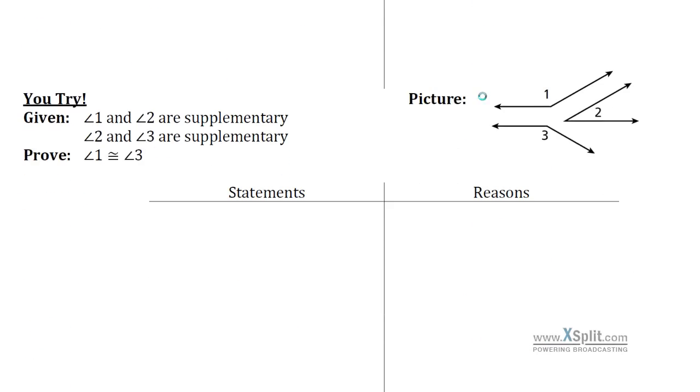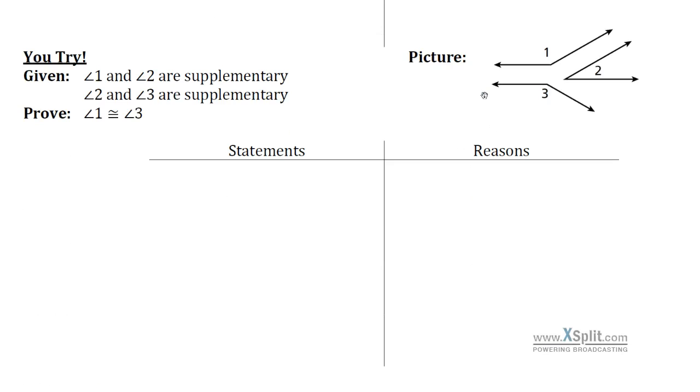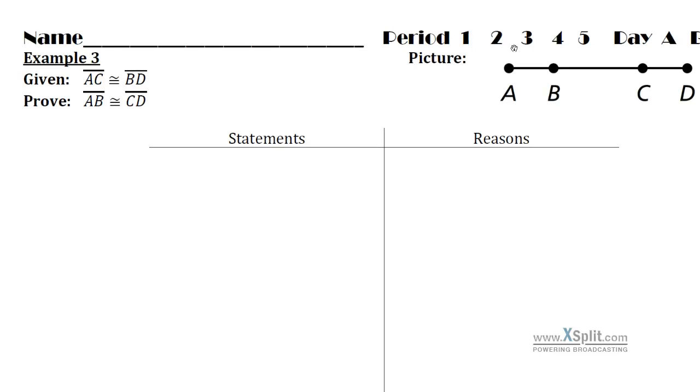I'm going to leave this second one for you to do if you'd like. Feel free to pause the video and give that a shot. But it's pretty clear to see if one and two are supplementary. If these two are supplementary to each other and two and three are supplementary, that one needs to be the same size as three. I'll leave you to that. If you have any questions, feel free to email me and I can definitely walk you through farther on that one.